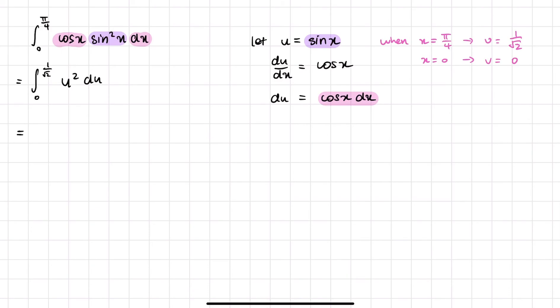Which we can easily integrate, u cubed on 3. And now we can sub it in, so 1 over 3 times 1 on root 2 cubed, minus if you substitute 0 in there we should get nothing. 1 over 3, 1 over 2 root 2, which equals to 1 over 6 root 2.